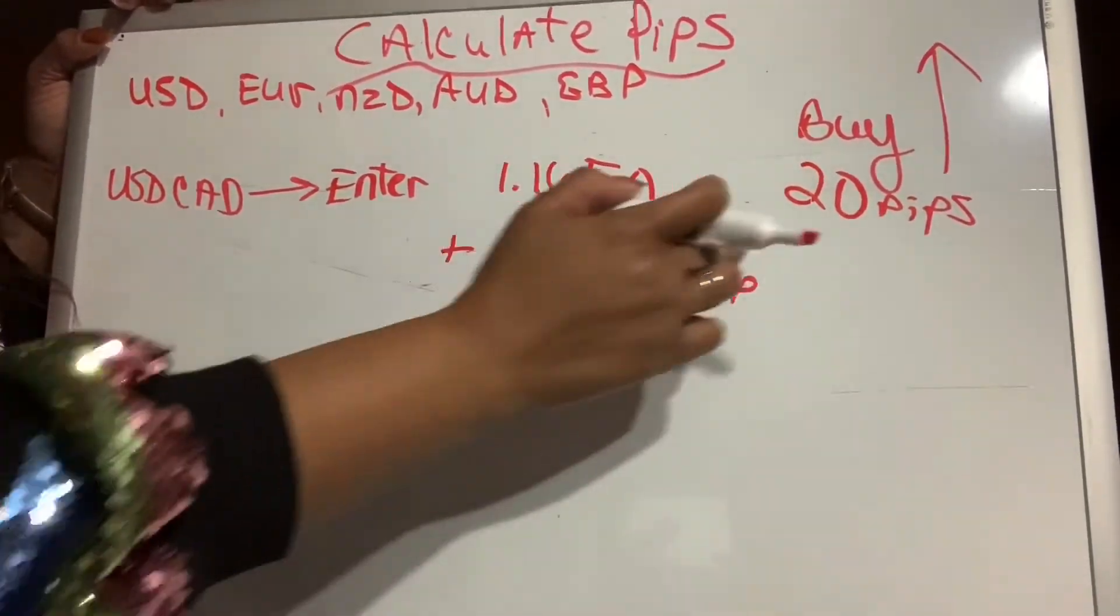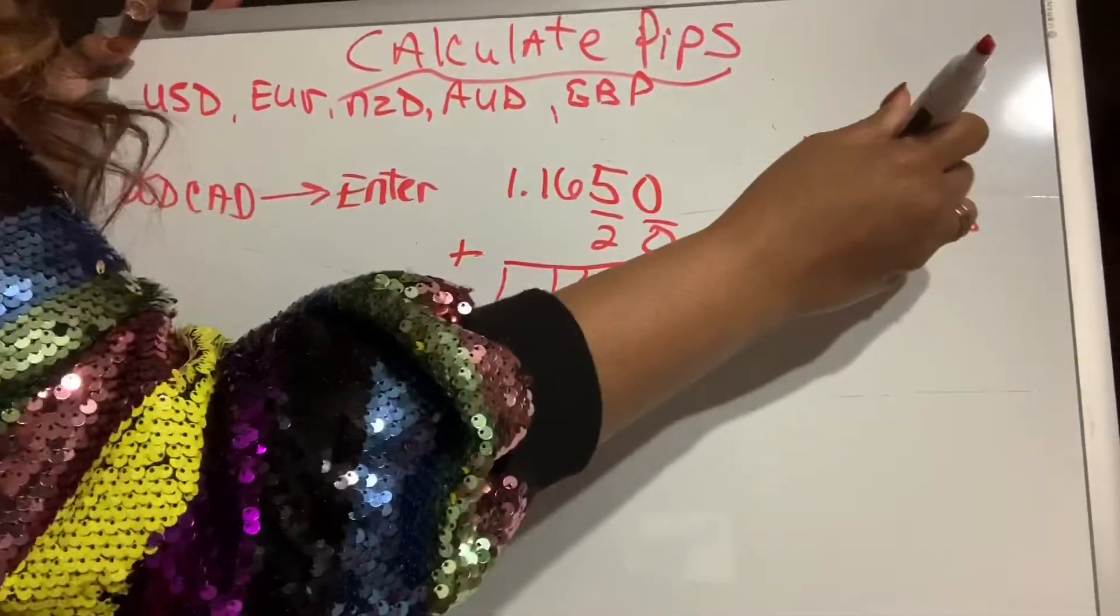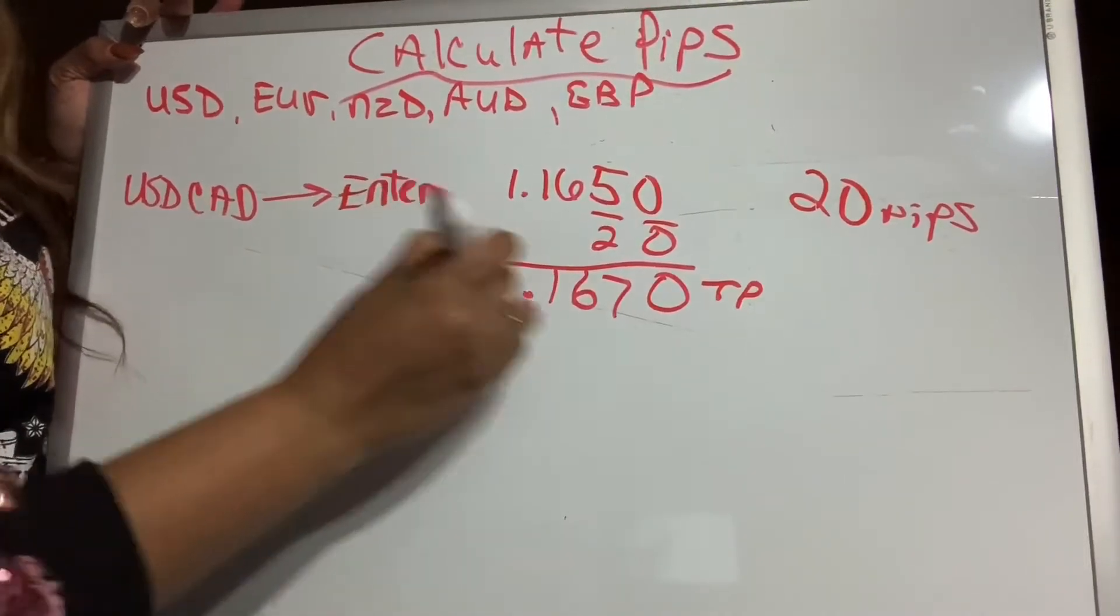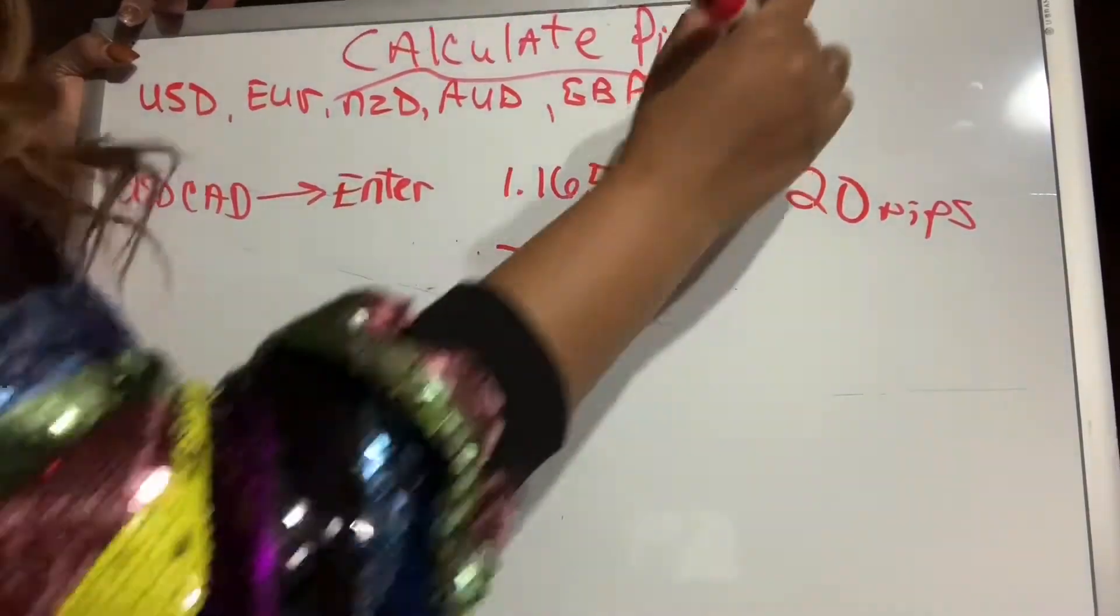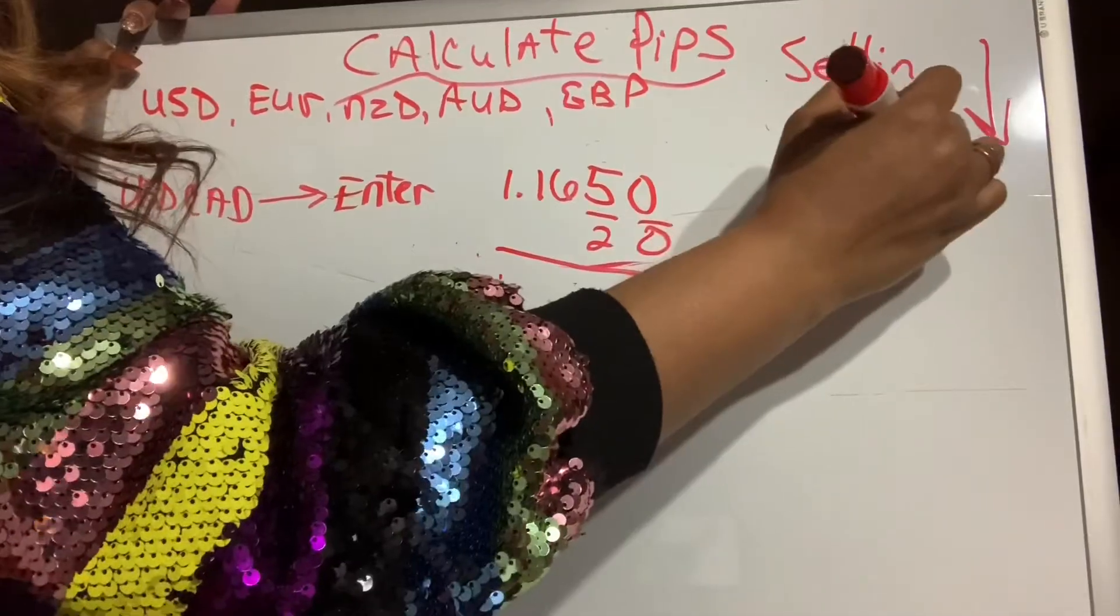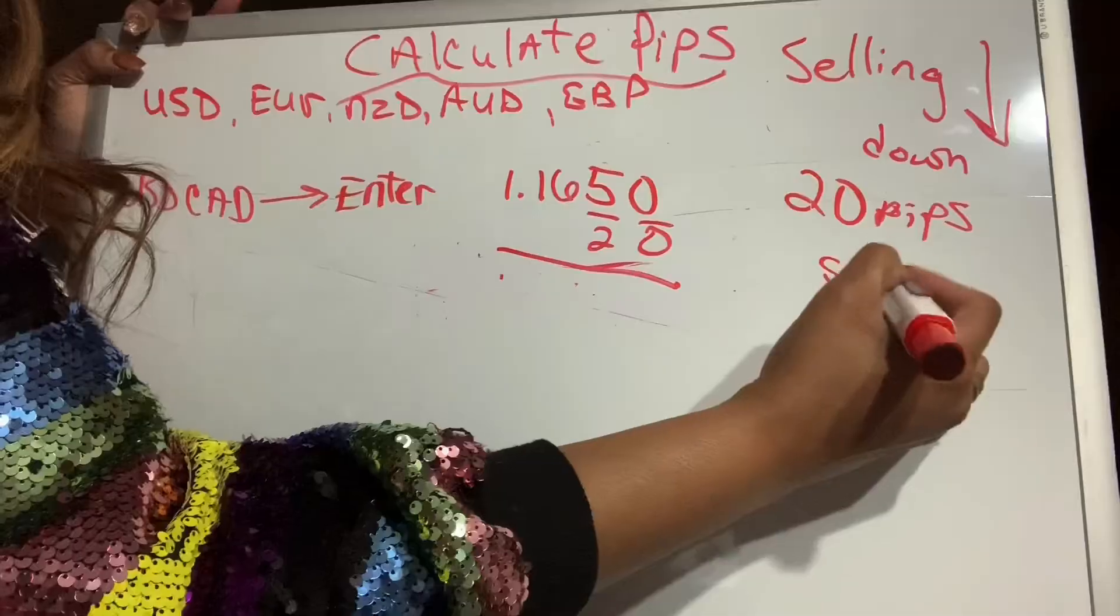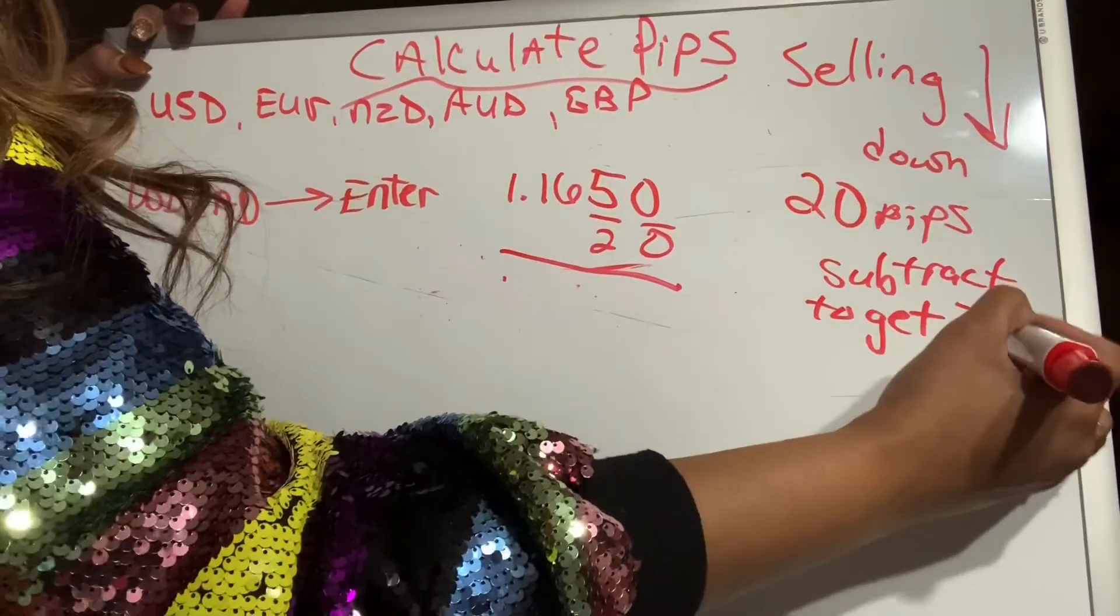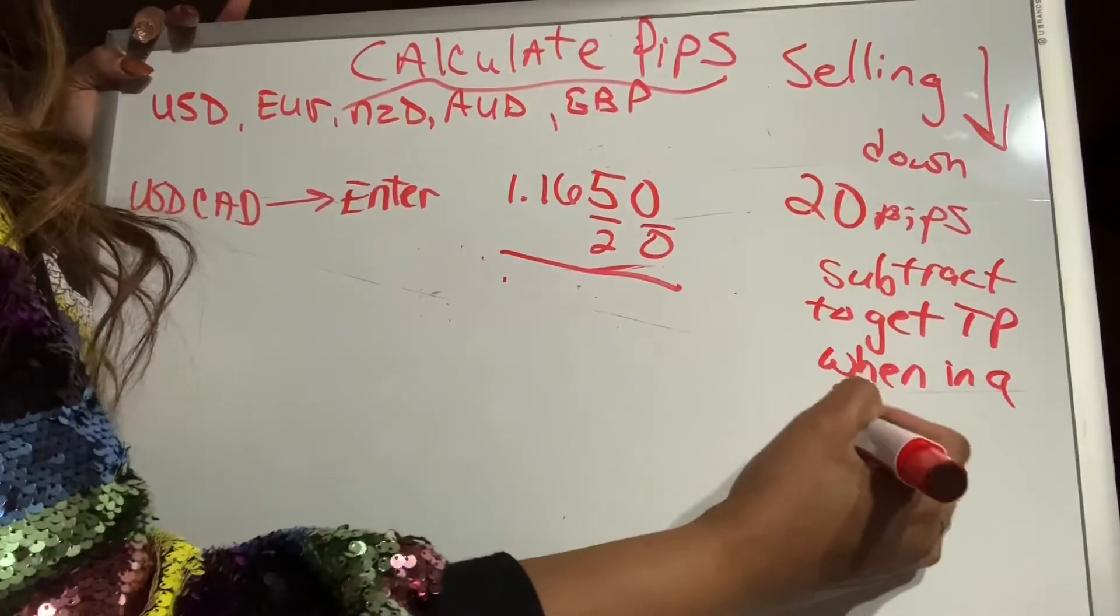When you're in a buy, you want to catch 10 PIPs going up to a higher price. But if we're in a sale, it's a different story. When you're catching PIPs, we catch PIPs going down. We want to catch PIPs going down in a sale. When you're selling, you want the market to drop and go down. So to get your take profit, you subtract to get TP when in a sale.